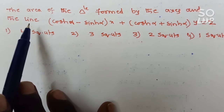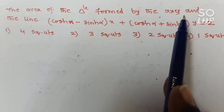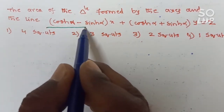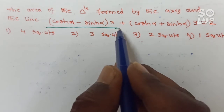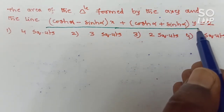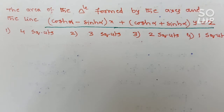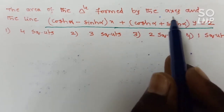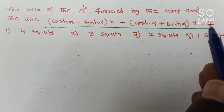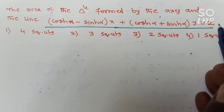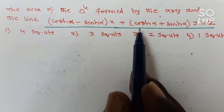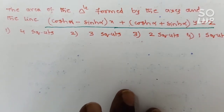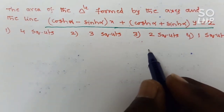Next problem: find the area of the triangle formed by the axes and the line (cosh α − sinh α)x plus (cosh α + sinh α)y equals 2. This is in the form Ax plus By equals some constant, and moving the right side gives Ax plus By plus C equals 0. This is the same model as the first question.